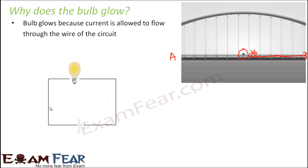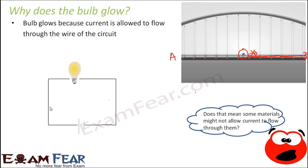So there are two requirements for current to flow. First, the circuit has to be complete — the path should be complete. Second, the wires or the material of which the path is made must allow current to flow through it. This means some materials allow current to flow and some do not.